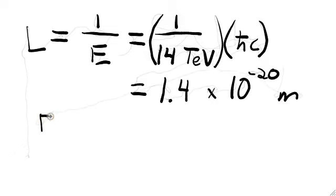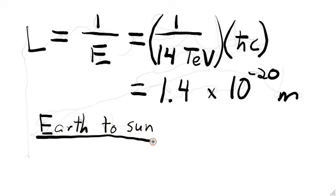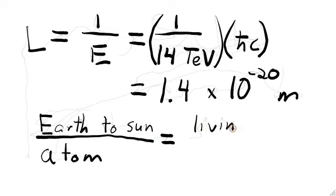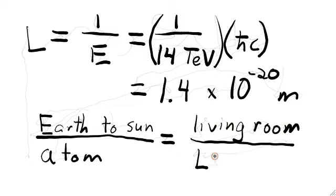For example, if you took the ratio of the distance between the Earth and the Sun, which is about 93 million miles, to the size of an atom, which is about the resolution of an electron microscope, this is the same as the ratio between the length of your living room and the LHC resolution size. That means if you shrank the distance between the Earth and the Sun down to living room size, and shrank atoms by that same amount, the resulting size of the atoms would be the LHC resolution size.